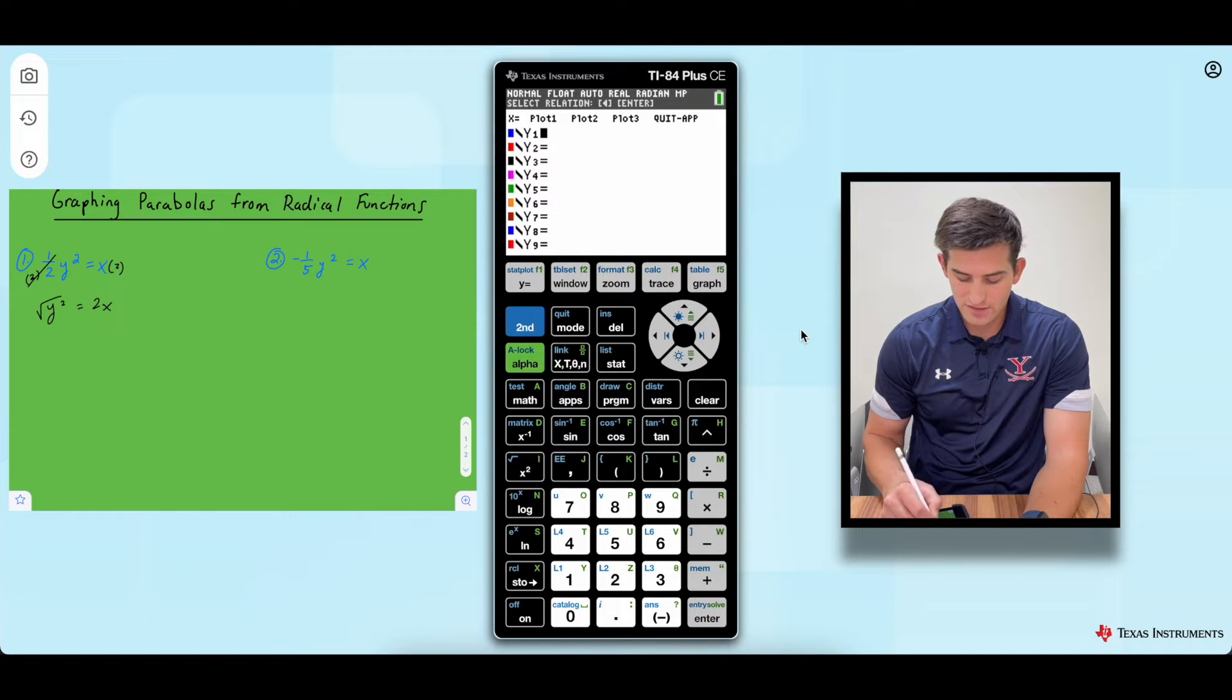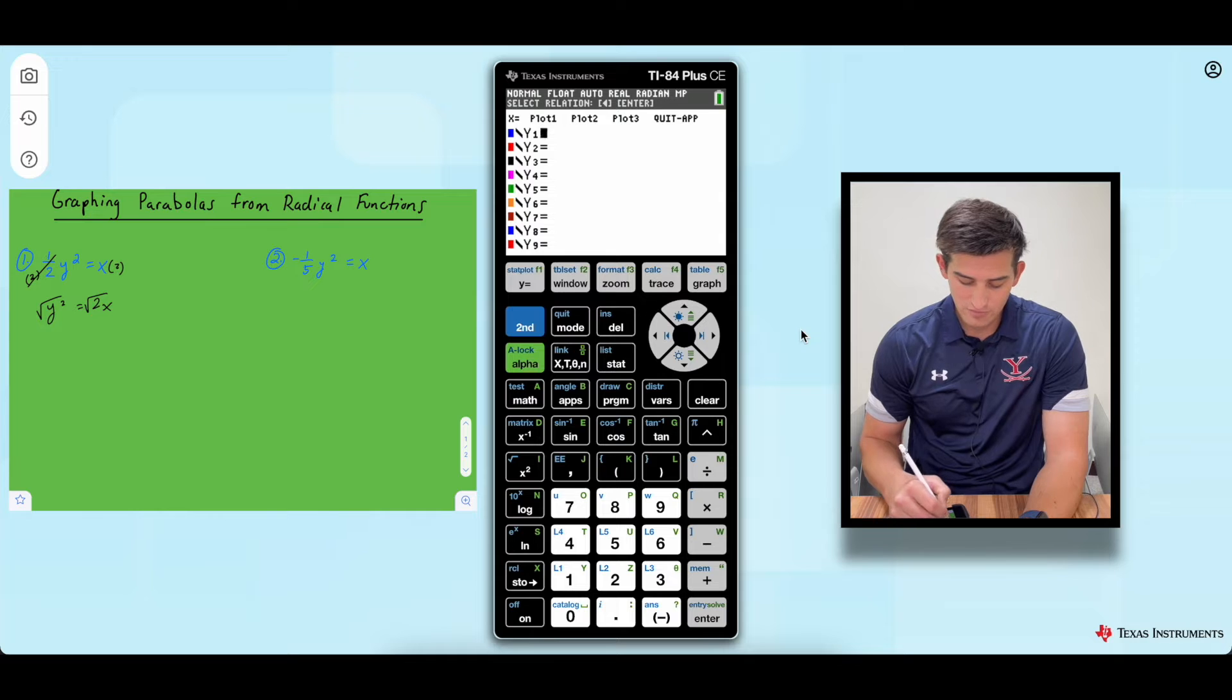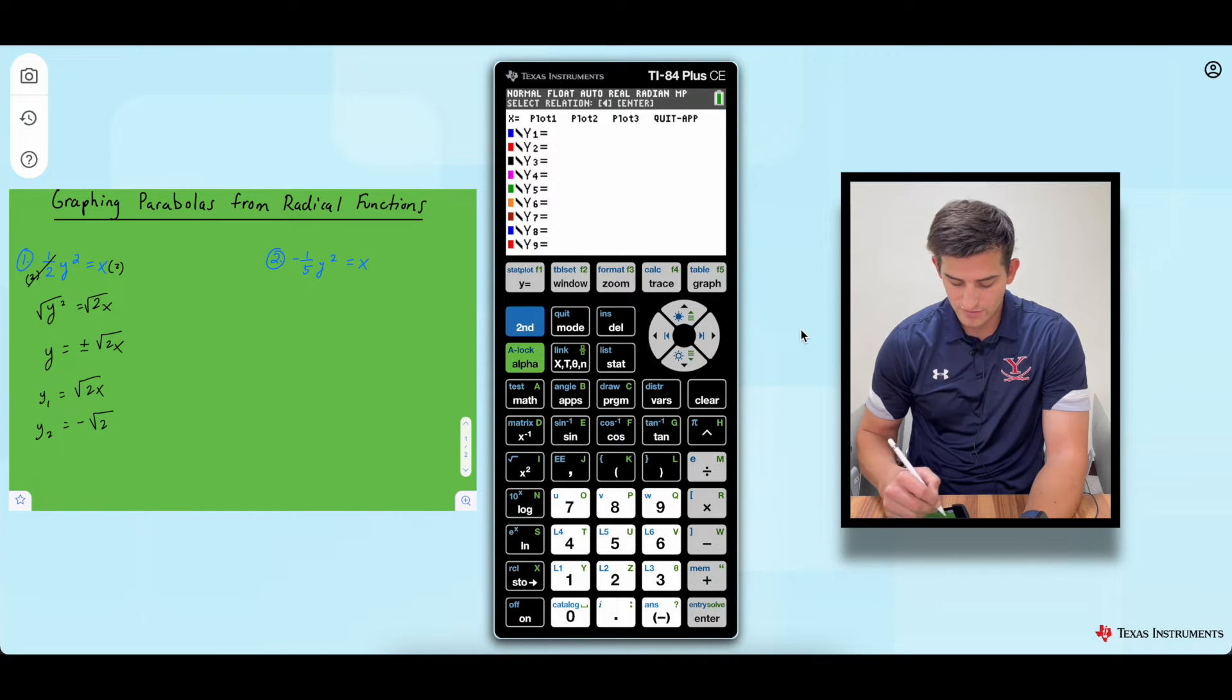Now to undo y squared, we're going to take the square root of both sides. But when we do that, we have to include positive or negative. So the two equations we're going to graph: y1, we're going to graph the square root of 2x and y2, we're going to graph negative square root of 2x. So those are the two equations we're going to graph in our calculator.